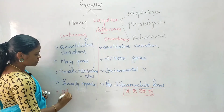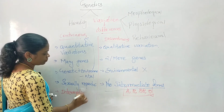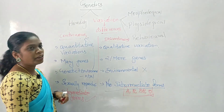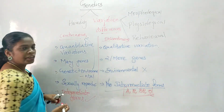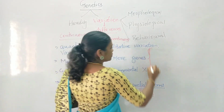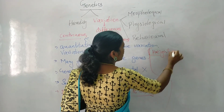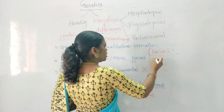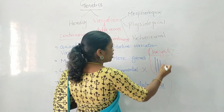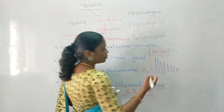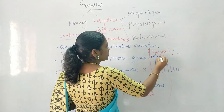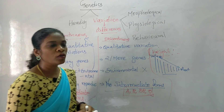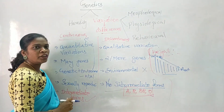In continuous variation, intermediate forms are present. A good example is height. If you take height, especially in the human population, you can find the tallest, taller, tall, and dwarf. From the tallest to the shortest, you can find intermediate forms. So that is the best example to explain continuous variation.